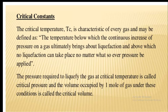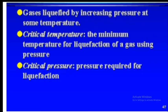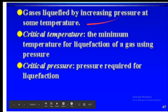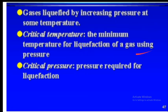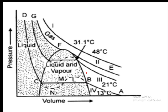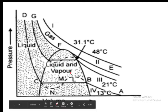Gases are liquefied by increasing pressure at some temperature. The critical temperature is the minimum temperature for liquefaction of the gas using pressure, and critical pressure is the pressure required for liquefaction at the critical temperature. Now let us study the isotherm of the great scientist Thomas Andrews — this isotherm is called Andrews isotherm.